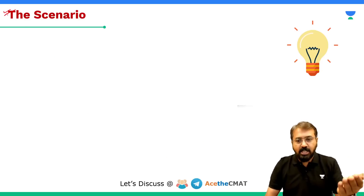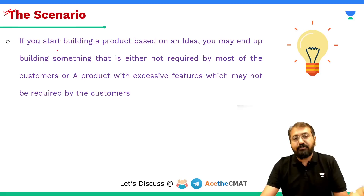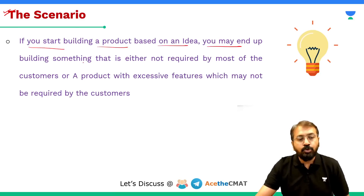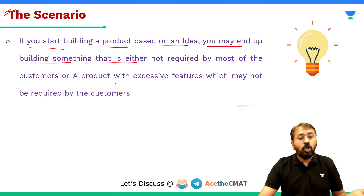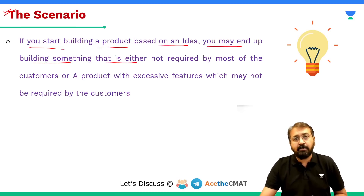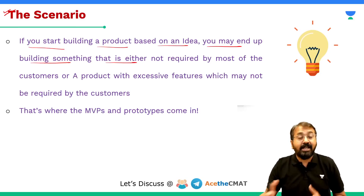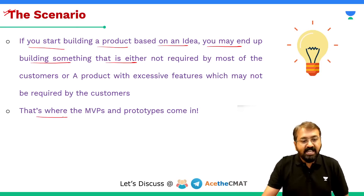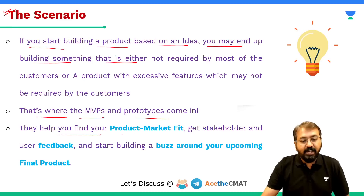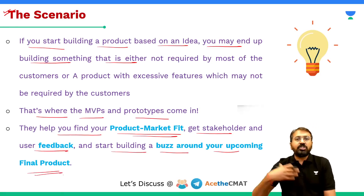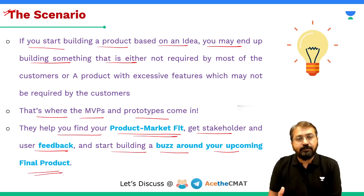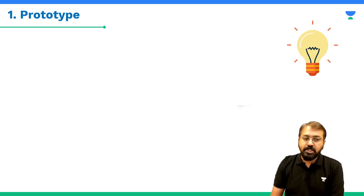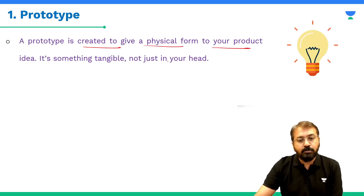So what is the scenario? Once you as an entrepreneur have finalized your idea, if you start building a product directly based on your idea, you may end up building something that is either not required by most customers, or a product with excessive features not needed by customers. That's why we create intermediate versions — prototype, MVP, alpha, beta — which help you find your product-market fit, get stakeholder and user feedback, and start building buzz around your upcoming final product.